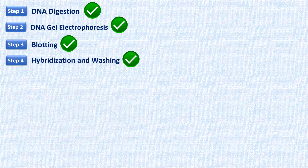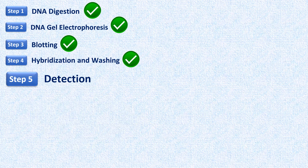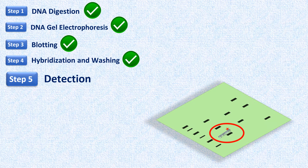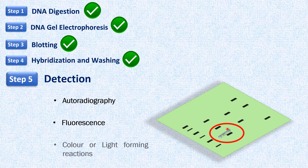In the fifth step, detection of the bound probe is carried out. We find the location of the double-stranded hybrid formed in the previous step. The probe is detected by autoradiography, fluorescence, or a color change, depending on what label was used in the probe.